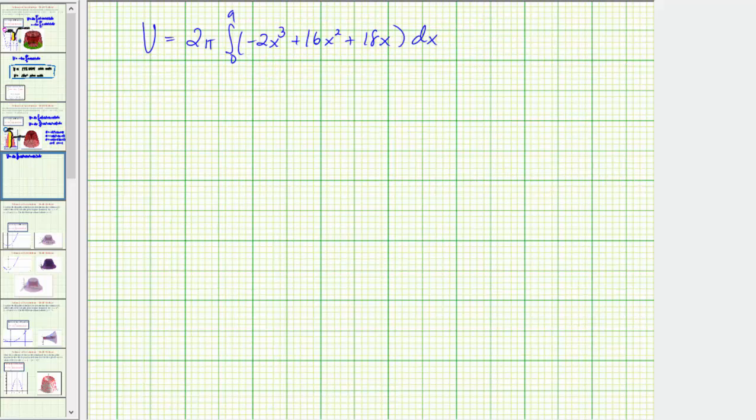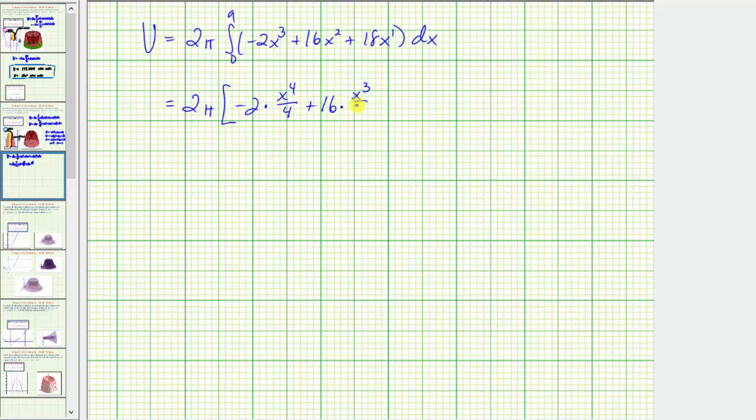If it's helpful, we can think of 18x as 18x to the first. So now we'll find the antiderivative. So we have 2 pi times, we have negative 2 times the antiderivative of x to the third is x to the fourth divided by 4, plus 16 times the antiderivative of x squared, which is x to the third divided by 3, and then plus 18 times the antiderivative of x to the first is x to the second divided by 2.